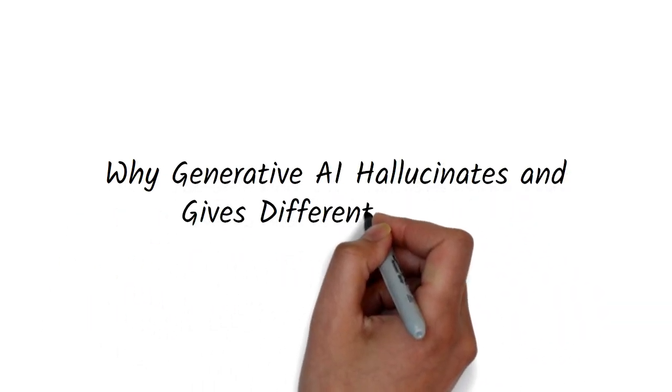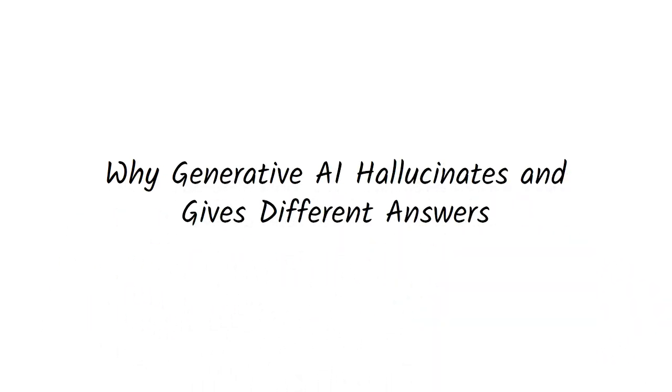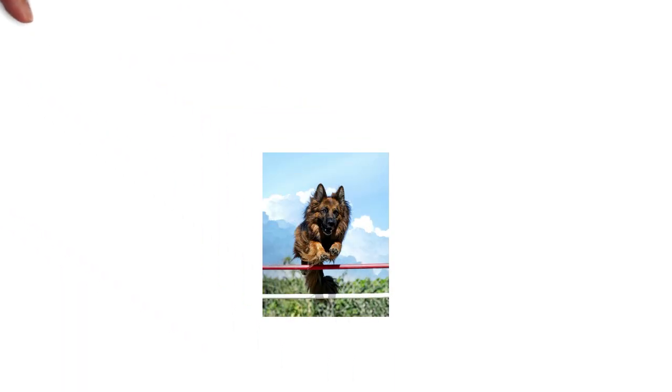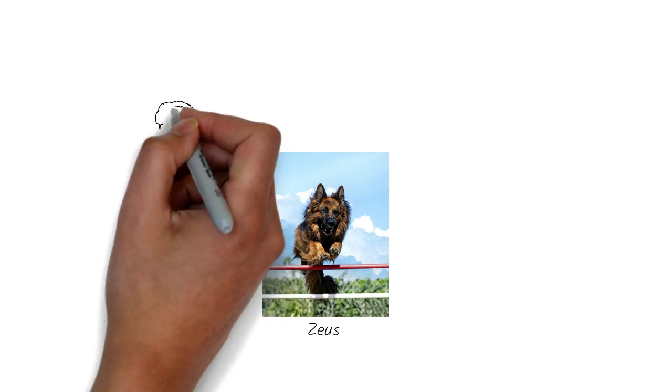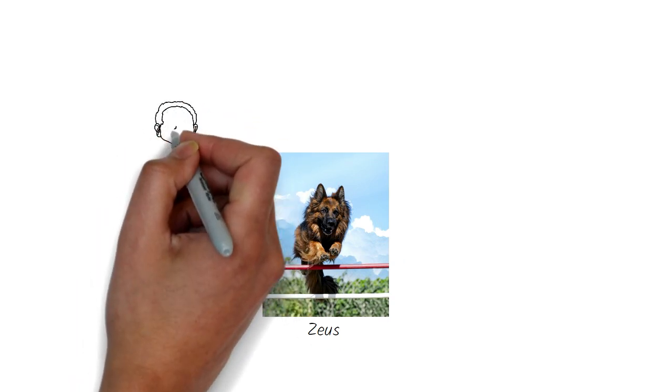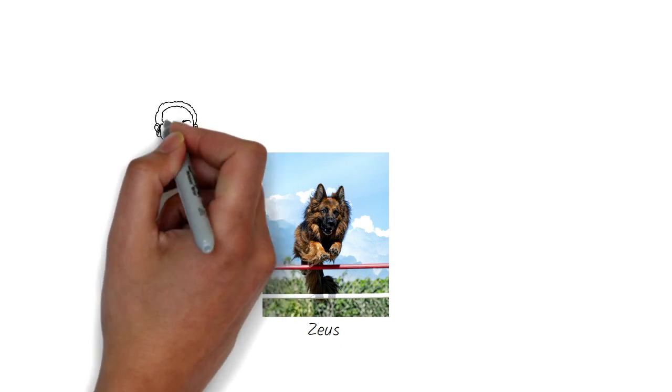Why Generative AI Hallucinates and Gives Different Answers. My dog Zeus is often full of energy. He can be excited and leap over a five-foot fence. I, of course, am proud of him because I see it as a display of vitality and health.